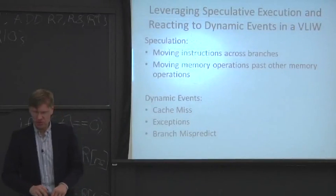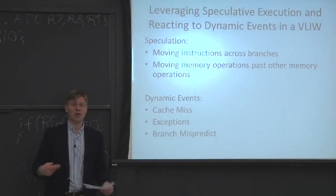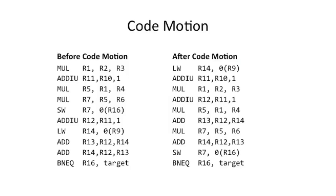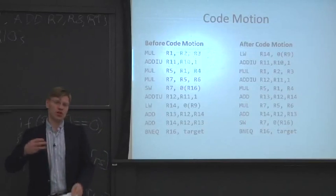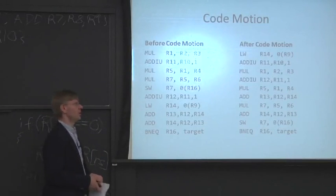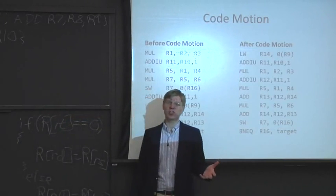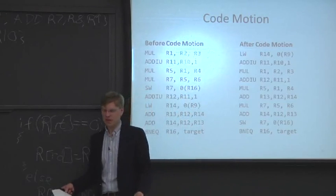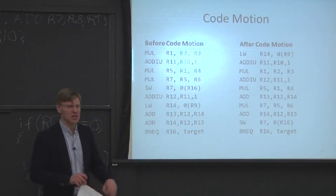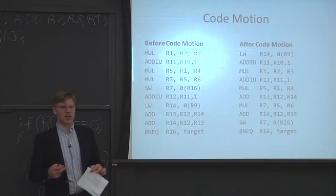Let's talk about what the compiler has to do — how the compiler thinks about this speculation. This is an introduction to scheduling for VLIW: the nitty-gritty of what the instruction scheduler or the back end of the compiler is going to be doing. We have two pieces of code: before code motion and after code motion. Code motion is the reordering of instructions in order to tolerate the latencies of instructions, or for alignment issues.